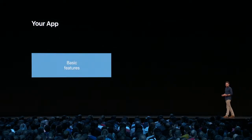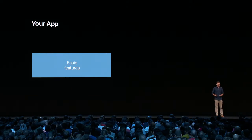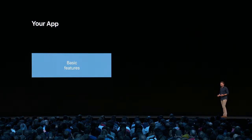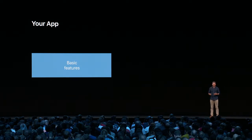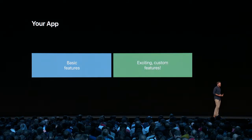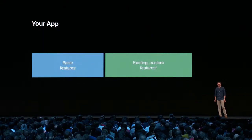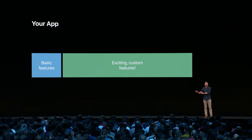Think about your own apps. First, you have those basic features everyone expects: controls and navigation, being accessible, and adapting your layout to different devices. But then there are those exciting custom features unique to your app — the fun features we pour our passion into that make us feel proud of what we've built. The goal of SwiftUI is pretty simple: we want you to spend as much time as possible on that fun stuff, and less time on the basic stuff, without compromising on quality. This is what we mean by giving you the shortest path to a great app.